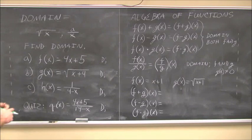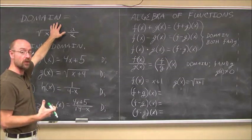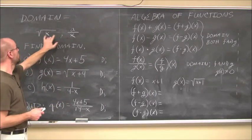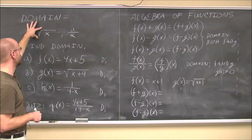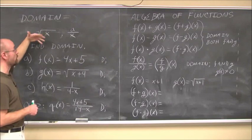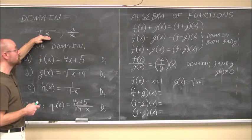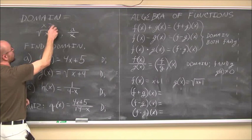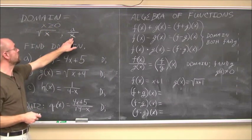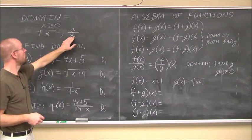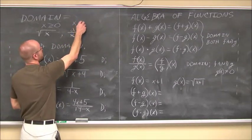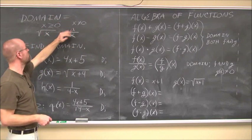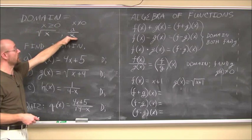Let's return to domain for a moment. When we're asked to find domain — what are the possible input values — we have to realize there are domain restrictions. One restriction is when we have a square root or an even-indexed root: we cannot find a real value when x is less than 0, so the value under the radical has to be greater than or equal to 0. It cannot be negative. If we have a variable in the denominator, we know we can never divide by 0, so the denominator cannot equal 0.